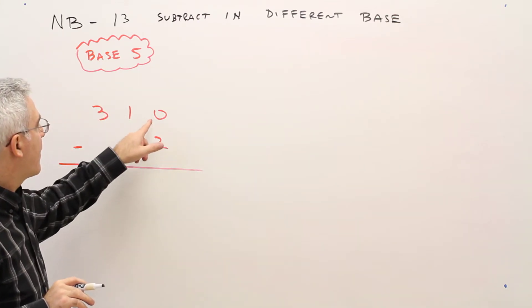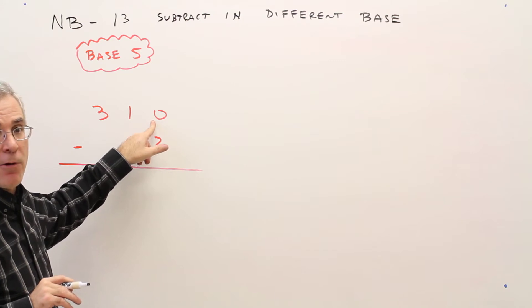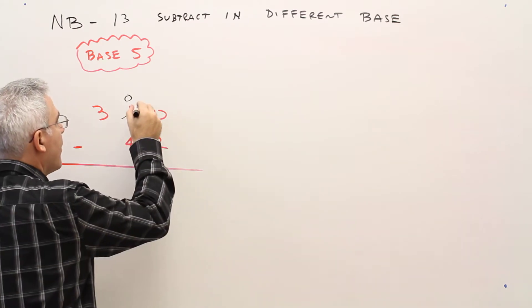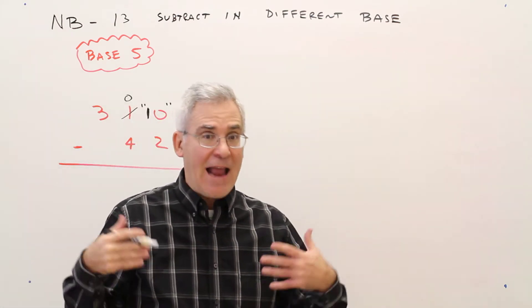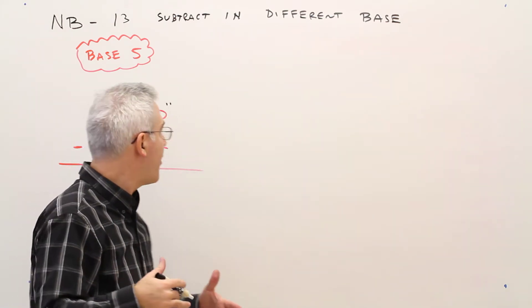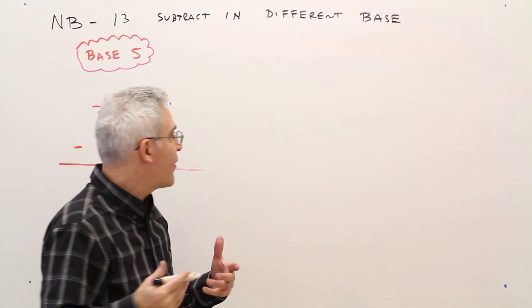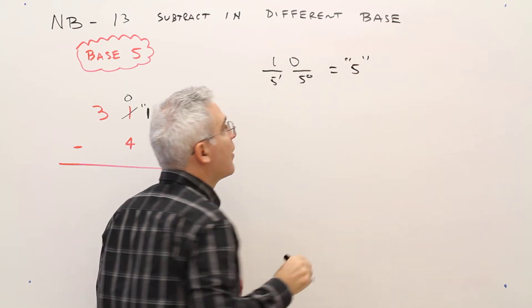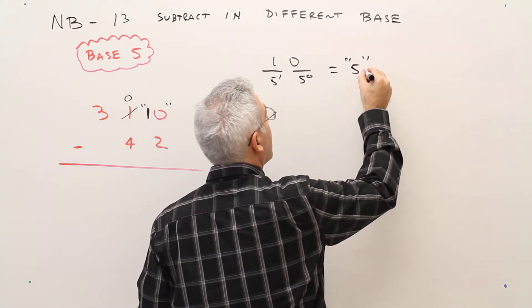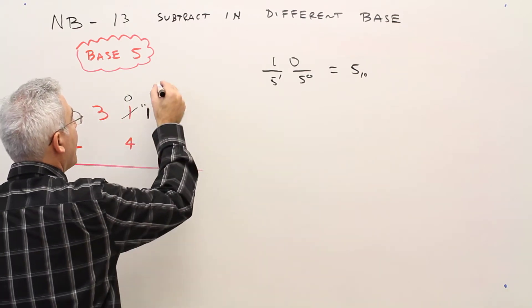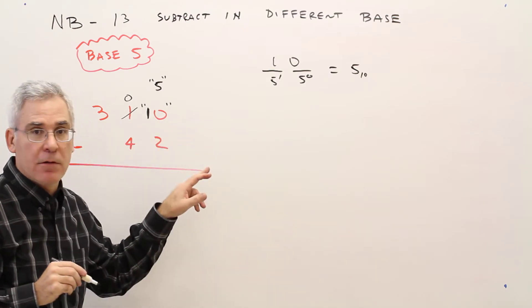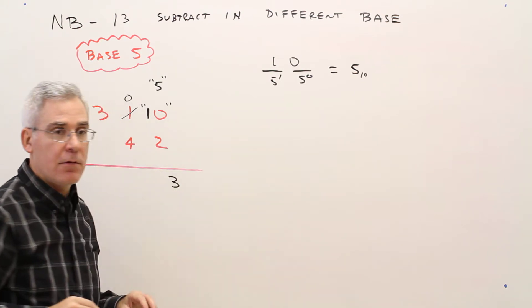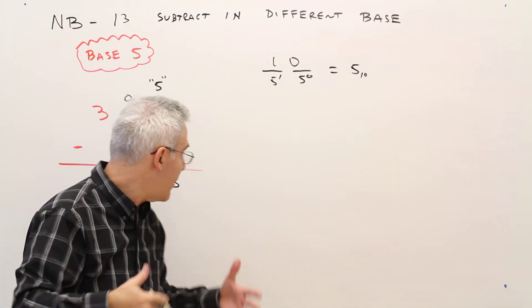Okay, right off the bat, I've got 0 minus 2. I need to borrow. So what I do is I cross this out, and I put this here. However, let me put that in quotation marks. That is not 10. You're so used to that. That is 1-0 in base 5. And just to let you know, 1-0 in base 5 is the equivalent of 5 in base 10. So I'm going to think of this as a 5. So 5 minus 2 is 3. And that's the same in base 5, base 10, etc.